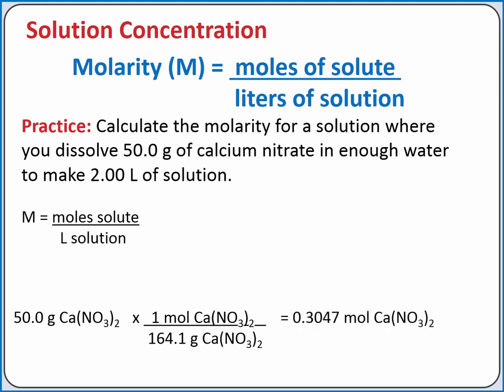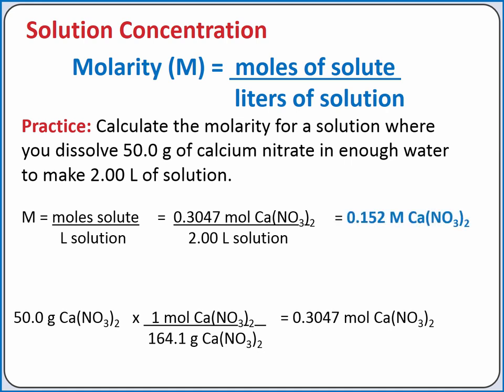So we have 0.3047 moles of calcium nitrate. Plugging this back into our equation for molarity, these moles of calcium nitrate are dissolved in enough water to make 2 liters of solution. Completing the calculation, we get 0.152 molar calcium nitrate. The units of molarity are molar and are represented using a capital M.